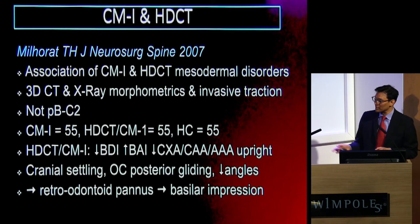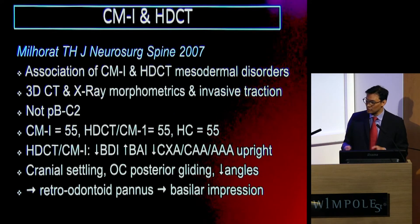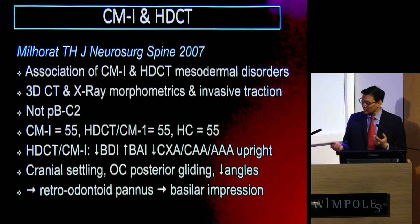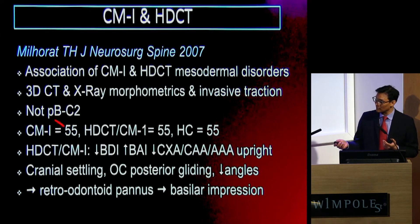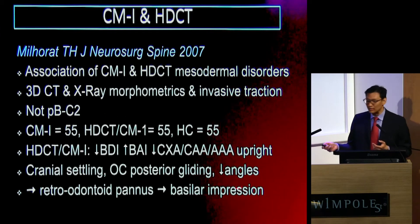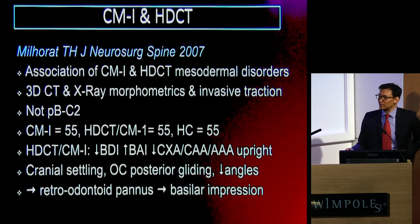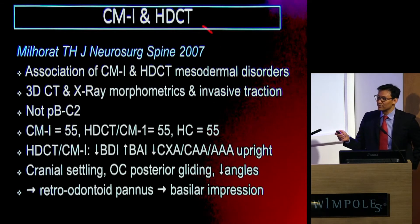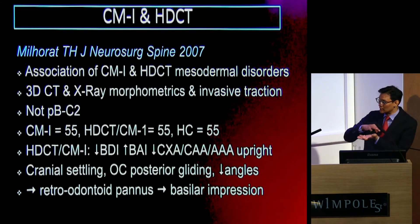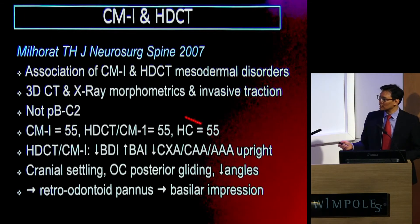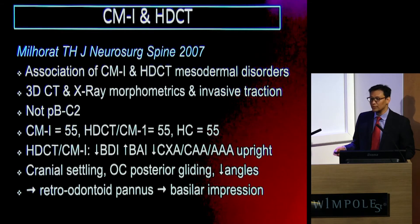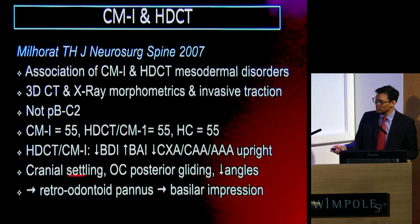What they found in terms of morphometrics was that in the subgroup of patients with connective tissue disorders and Chiari-1 malformation, you had altered morphometrics from the rest of the Chiari-1 malformation population and healthy controls. It was then proposed that in patients with connective tissue disorders there is a process of cranial settling — occipital cervical posterior gliding, which means a translational movement — resulting in decreased clivo-axial angles among other things, which then results in progressive retro-odontoid pannus formation.